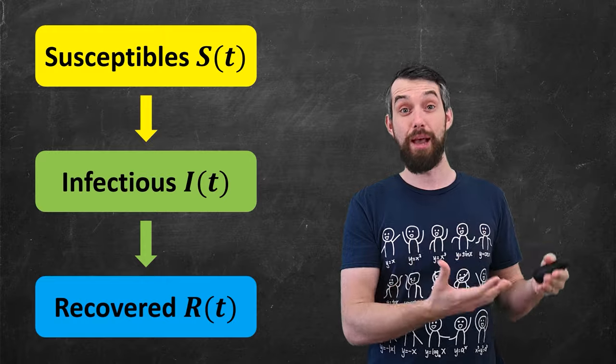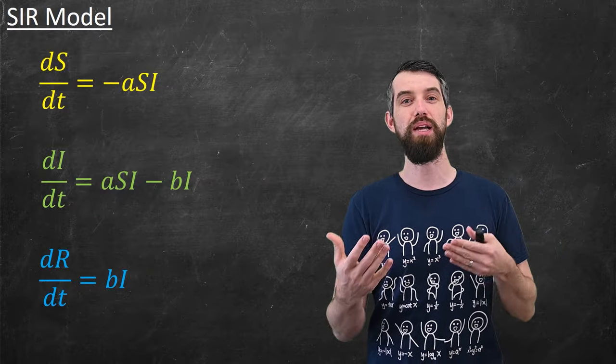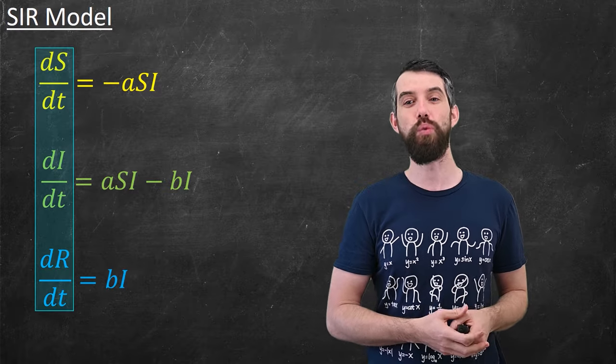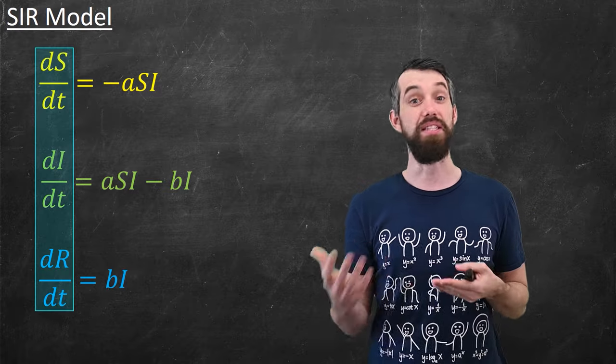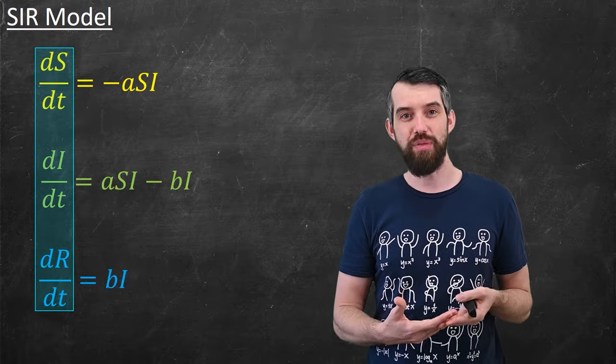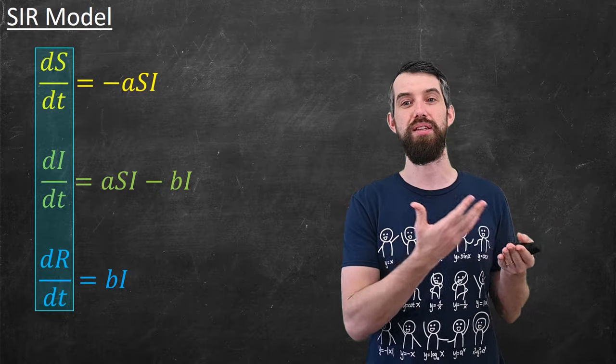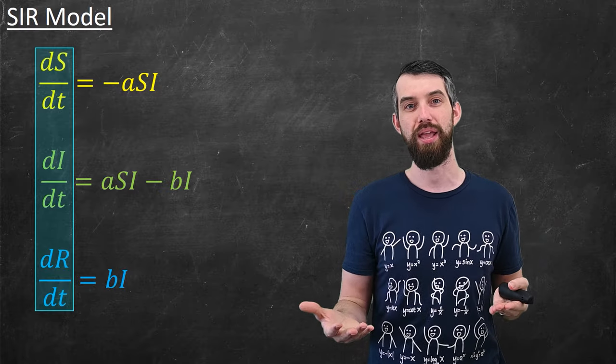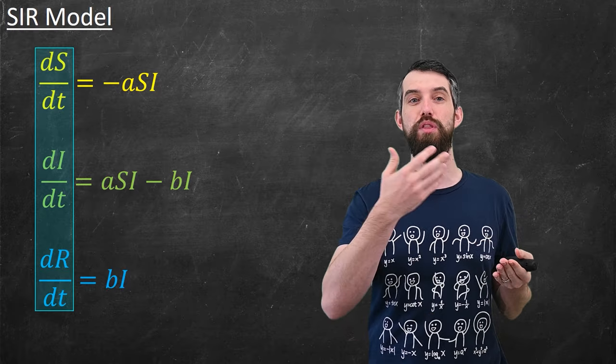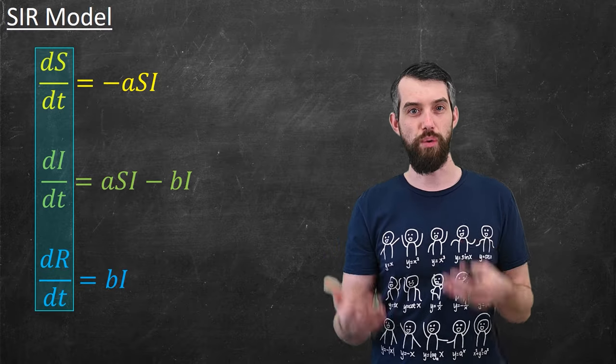And then the way that we captured this mathematically in the SIR model was a system of differential equations. The way this worked is that we had three different rates of change. dS/dt, the so-called derivative of S with respect to t, is the way that mathematicians describe a rate of change in the number of susceptible people as time goes on. And then there's actually three equations, one for the rate of change of susceptibles, one for the rate of change of infectious, and one for the rate of change of recovered.